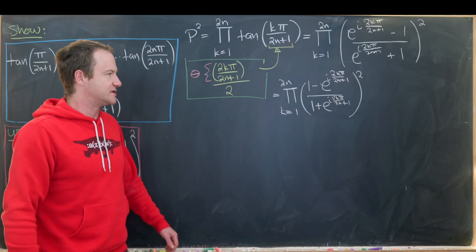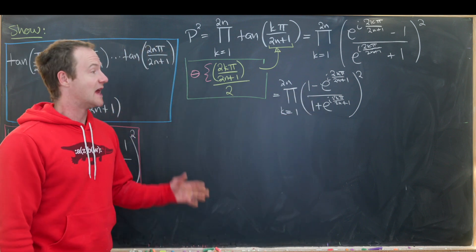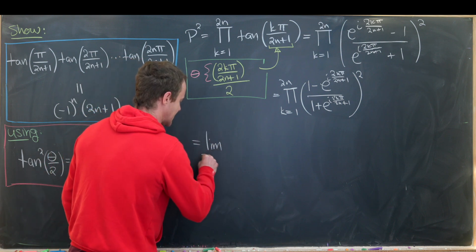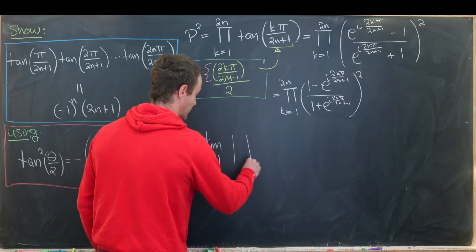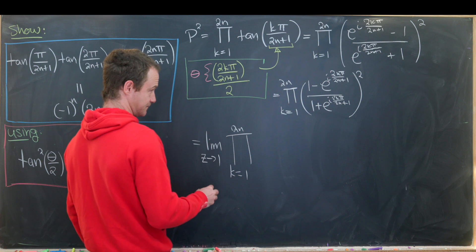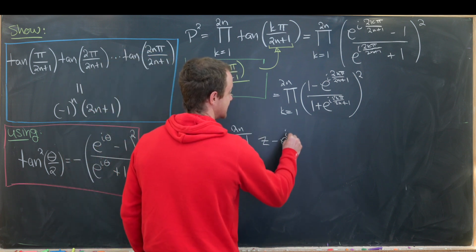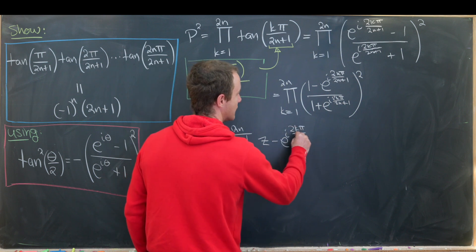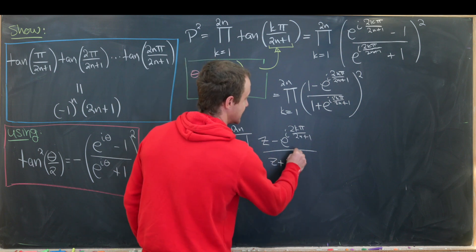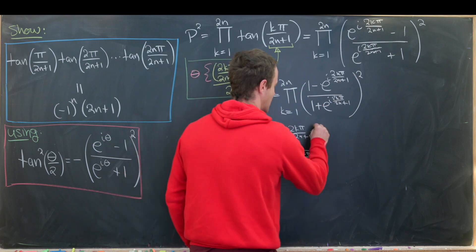But now I'd like to introduce a variable into this and I'd like to replace the number 1 with a variable z and then take a limit. So this is going to be equal to the limit as z approaches 1 of our product now k equals 1 up to 2n of now we have z minus e to the i 2kπ over 2n plus 1 over z plus e to the i 2kπ over 2n plus 1 and then quantity squared.